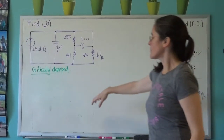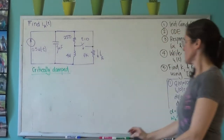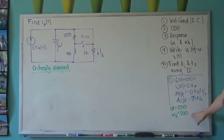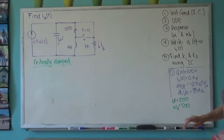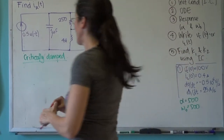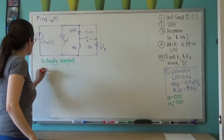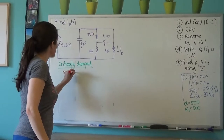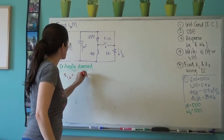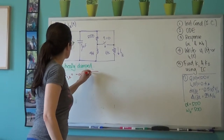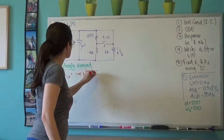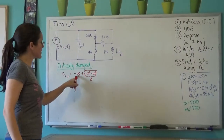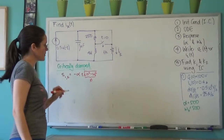Now that we know the circuit is critically damped, the two interesting things are alpha and omega — they're the same. So if I were to find the roots of the equation, S1 and S2 would be the same, which is minus alpha plus or minus the square root of alpha squared minus omega naught squared, and this is zero. Therefore I have two repeated roots, both equal to minus alpha.